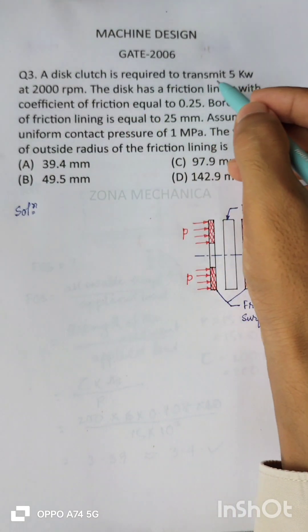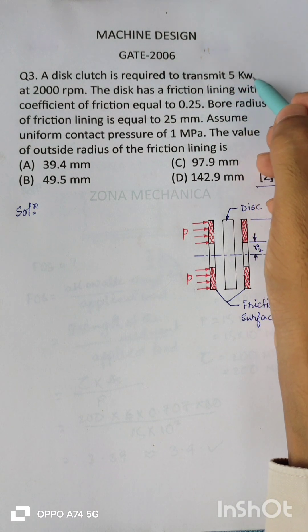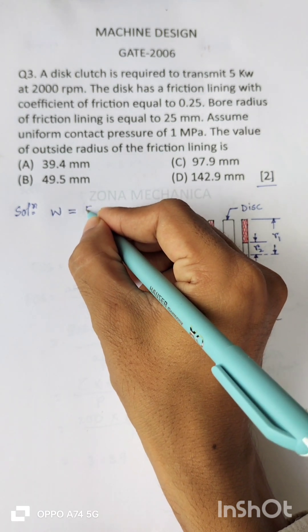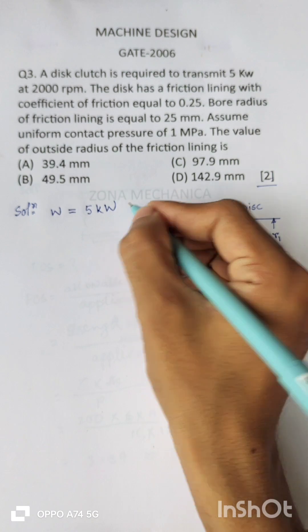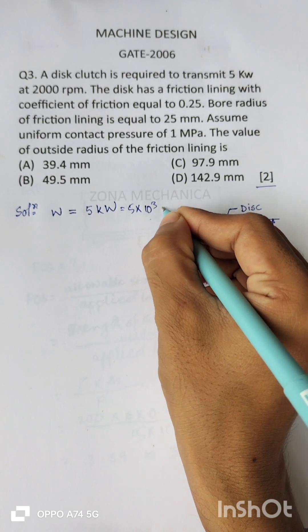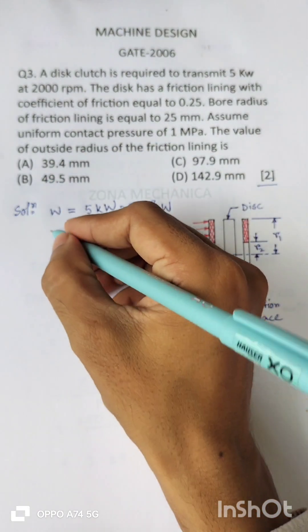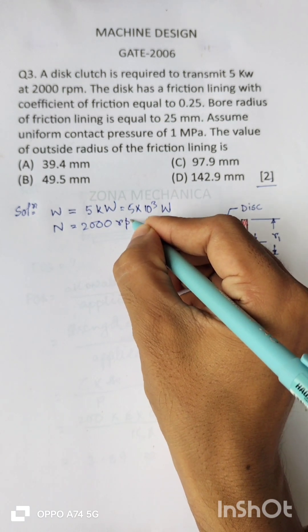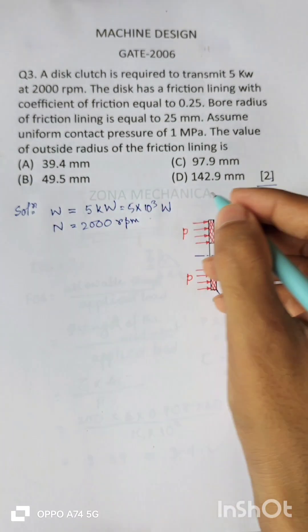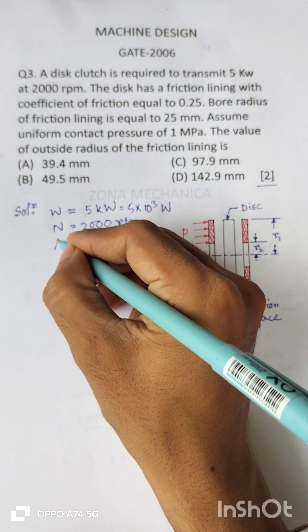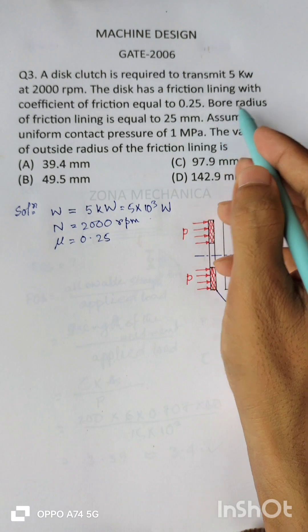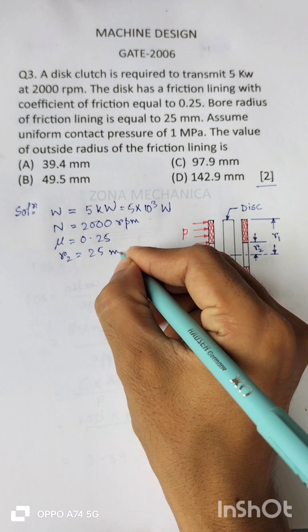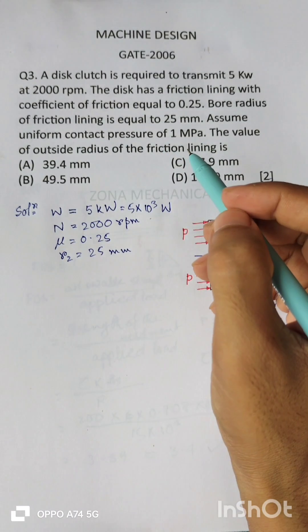Then what are the data given? The clutch is to transmit 5 kilowatt, so let W be the load, 5 kilowatt, that is equal to 5 into 10 to the power 3 watt, and the RPM is 2000 rpm, and the friction between the disc and clutch surface μ is equal to 0.25, and bore radius, that is the inner radius R2, is given as 25 mm. Assume uniform contact pressure.